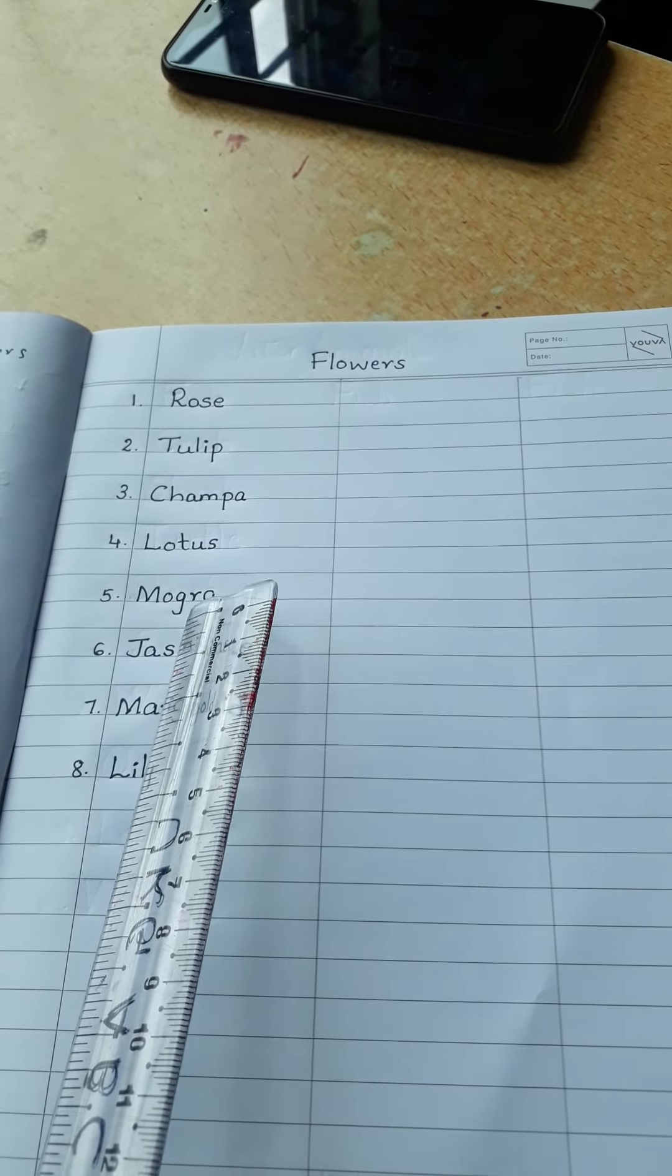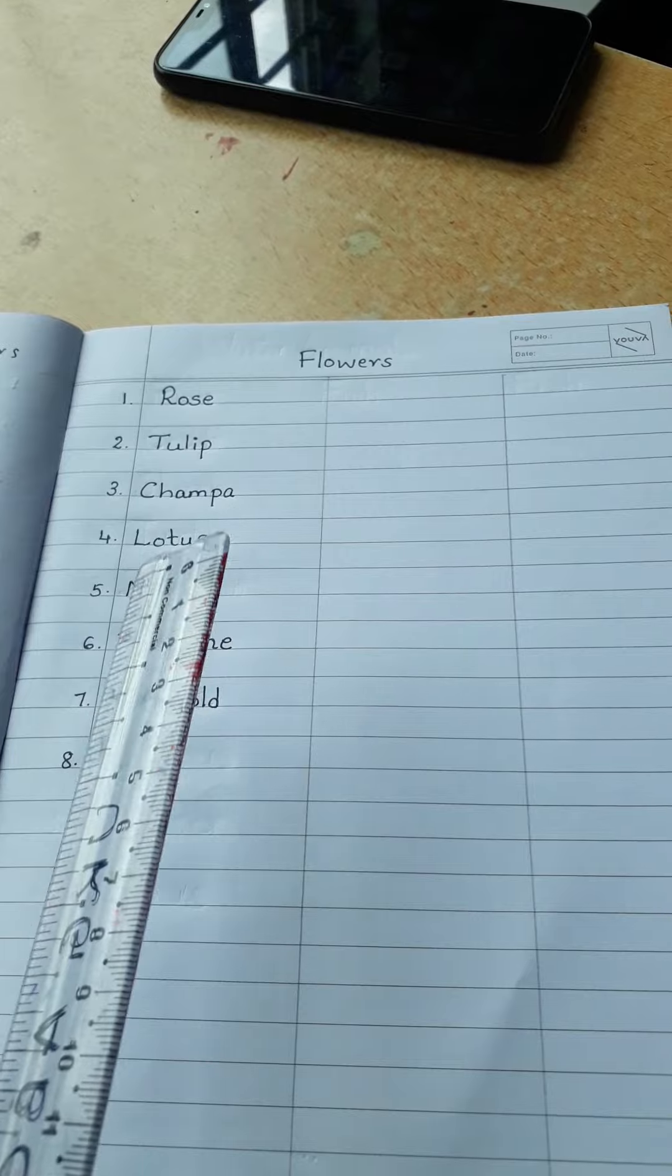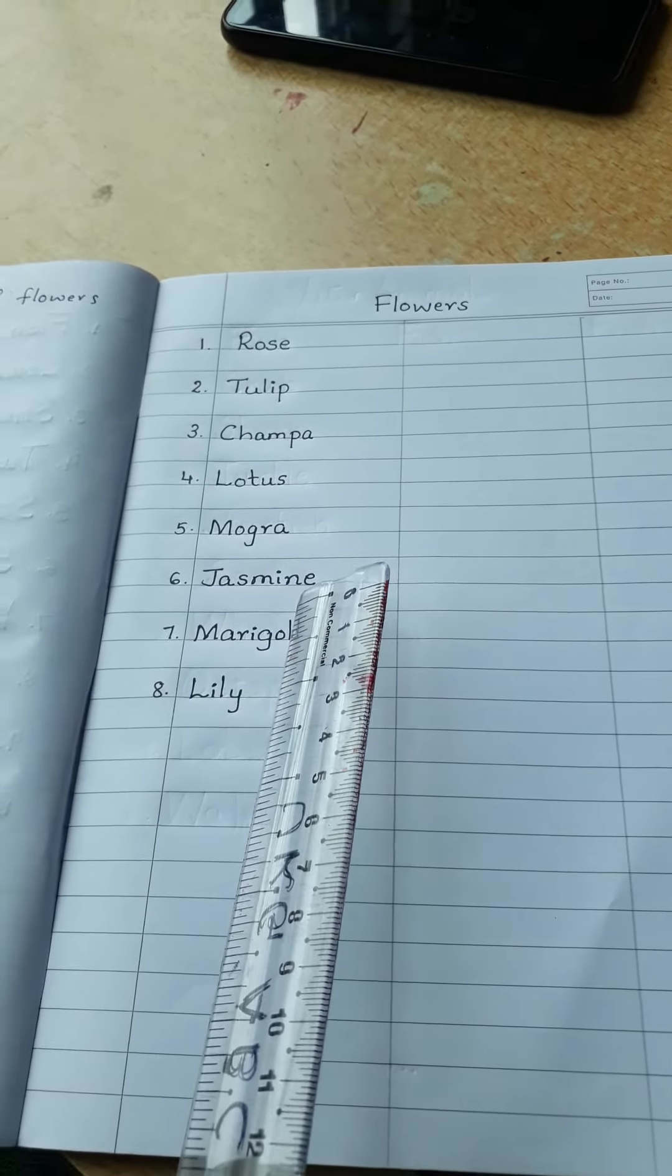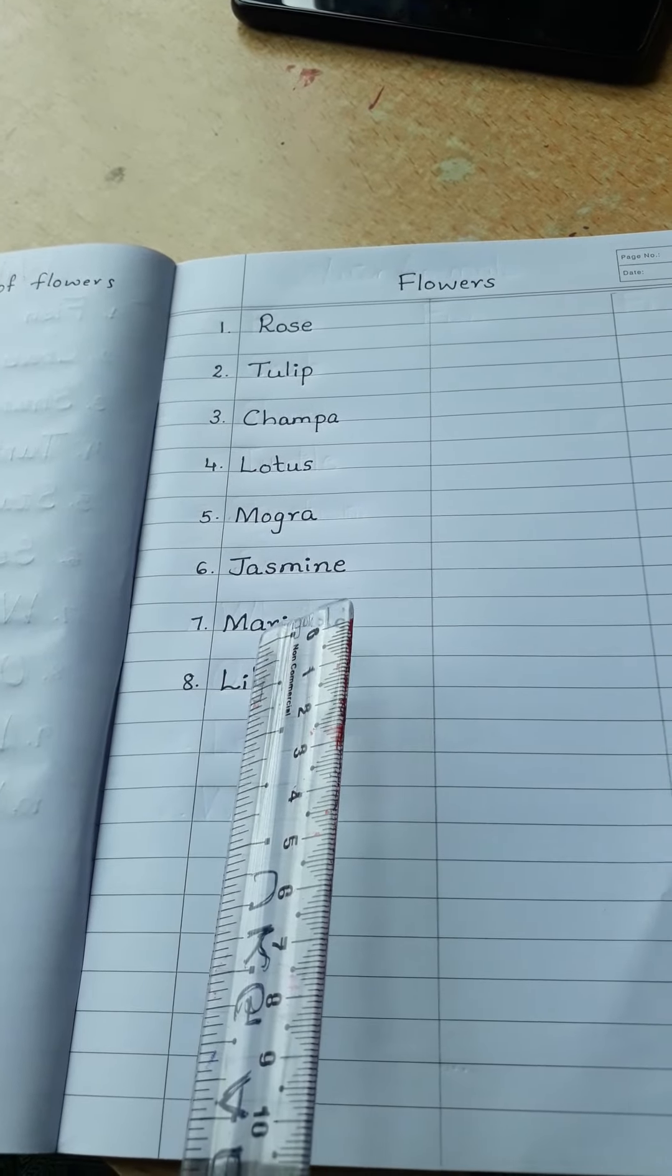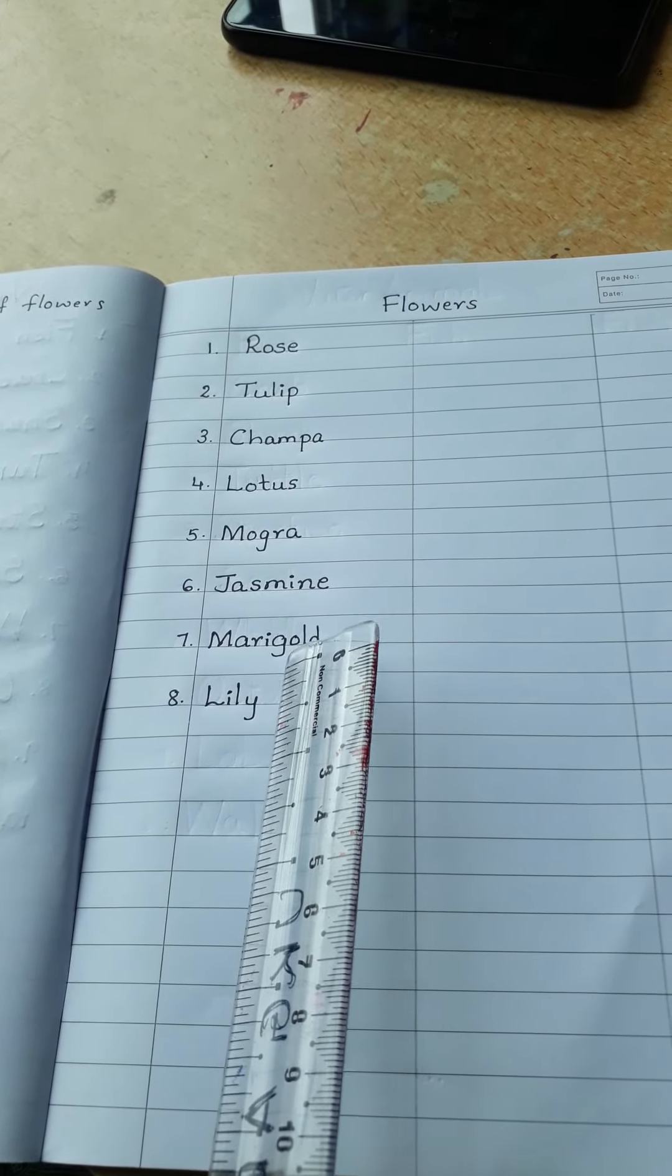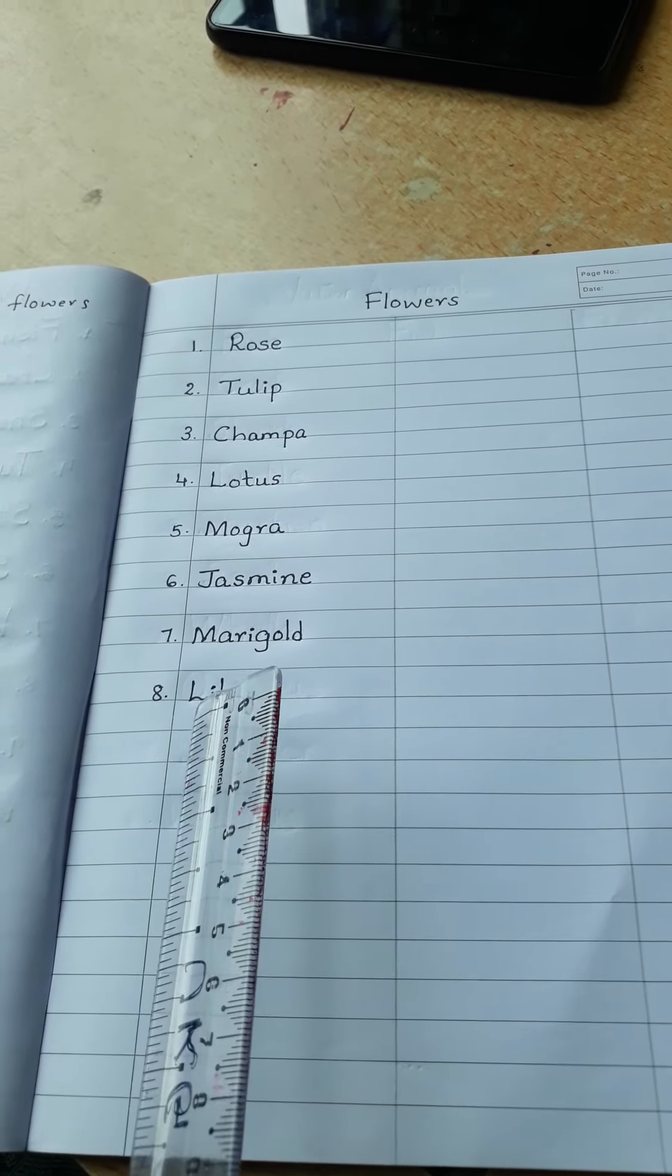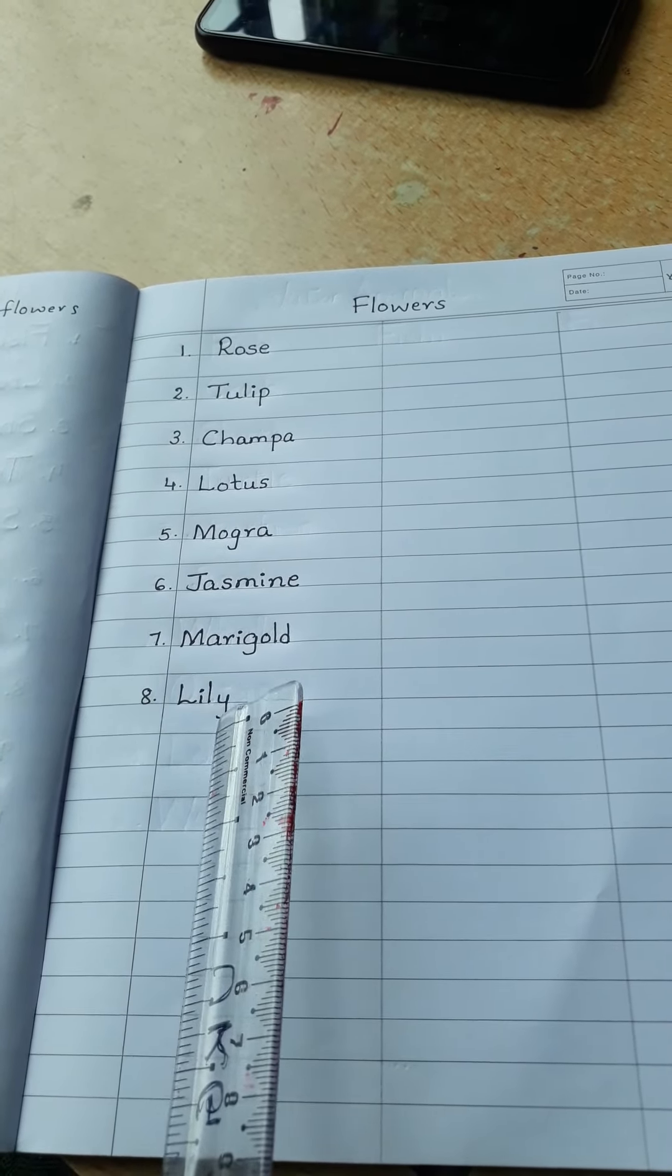M-O-G-R-A, mogra. J-A-S-M-I-N-E, jasmine. M-A-R-I-G-O-L-D, marigold. And the last one is L-I-L-Y, lily.